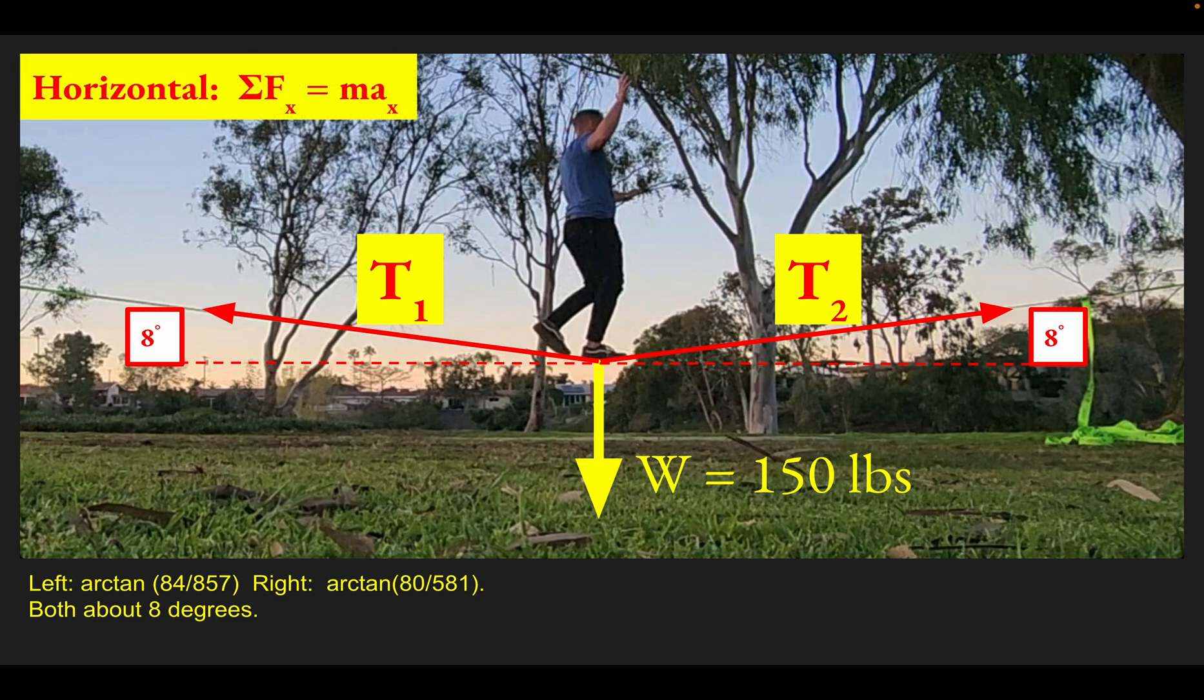Let's look at the horizontal forces. There are just two: the horizontal part of T2 and the horizontal part of T1. The horizontal part of T2 would be T2 cosine 8 degrees—I'd pick cosine because it's adjacent. Pulling in the negative direction would be T1 cosine 8 degrees.